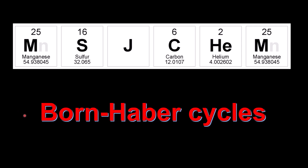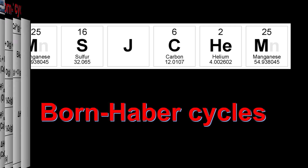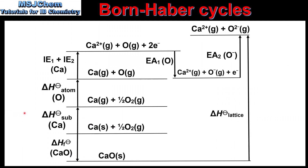This is MSJChem. In this video I'll be looking at the Born-Haber cycle for calcium oxide. Here we have the complete Born-Haber cycle for calcium oxide, starting with the bottom left which is the enthalpy of formation. This involves the formation of 1 mole of calcium oxide from its elements in their standard states.